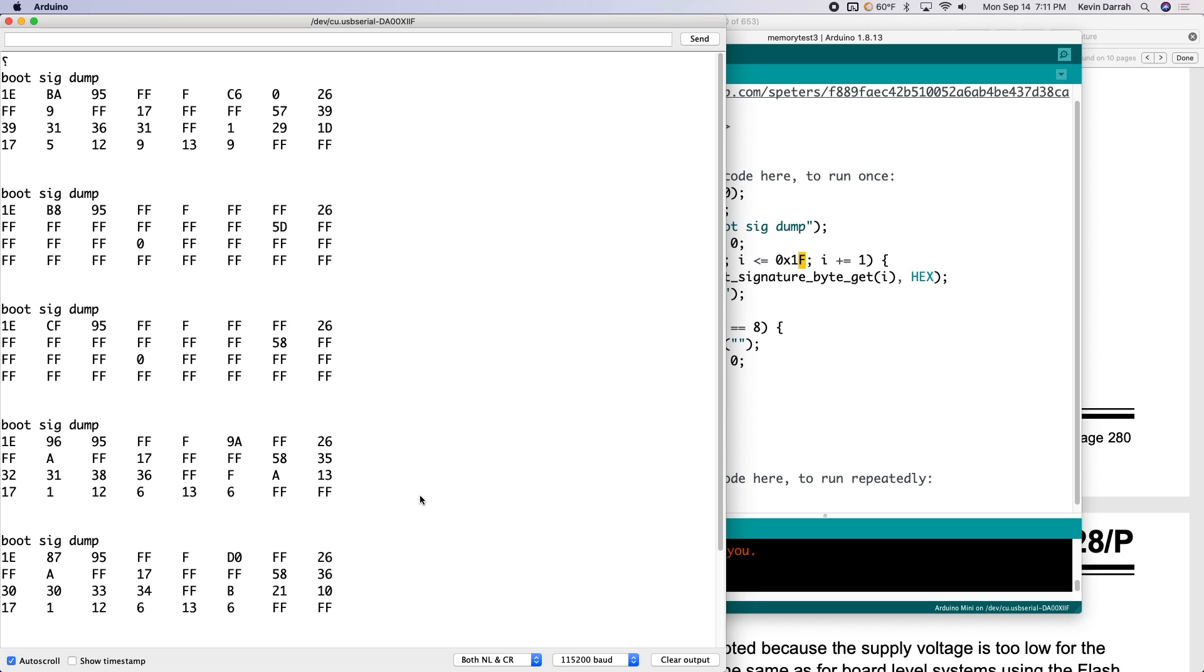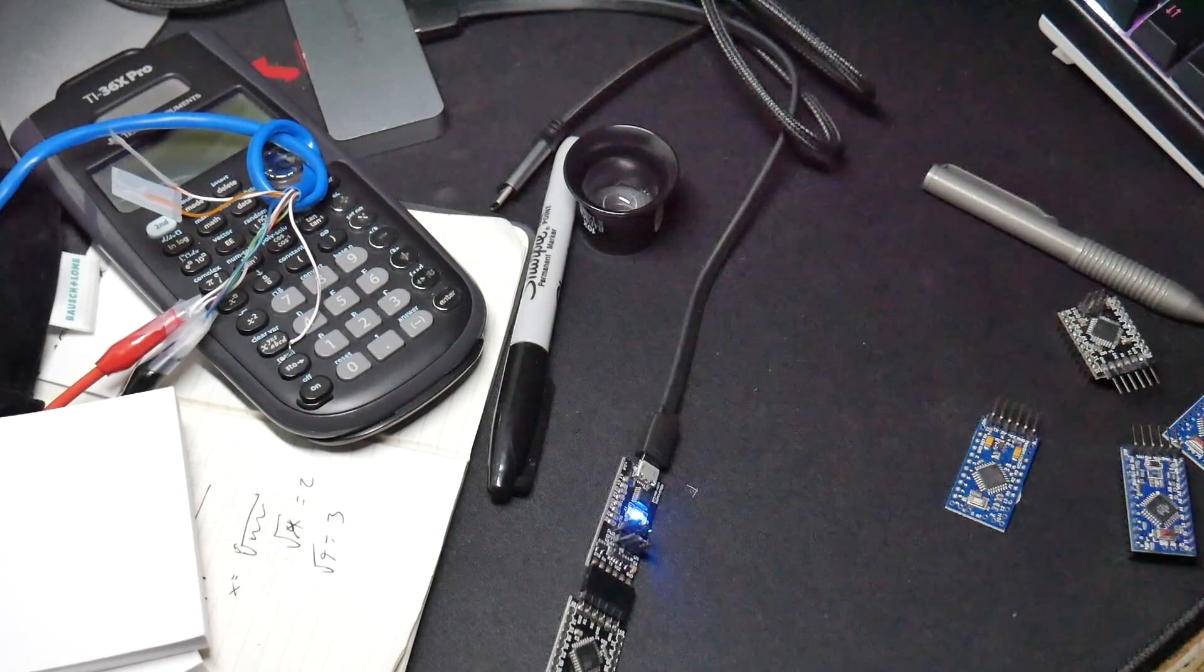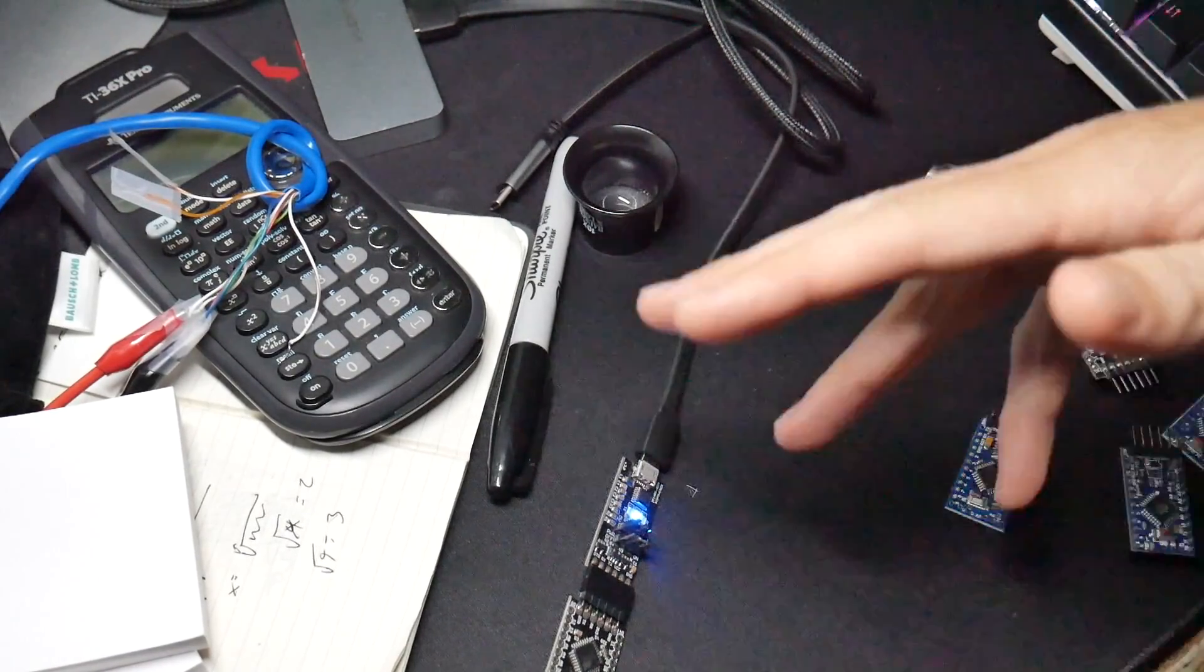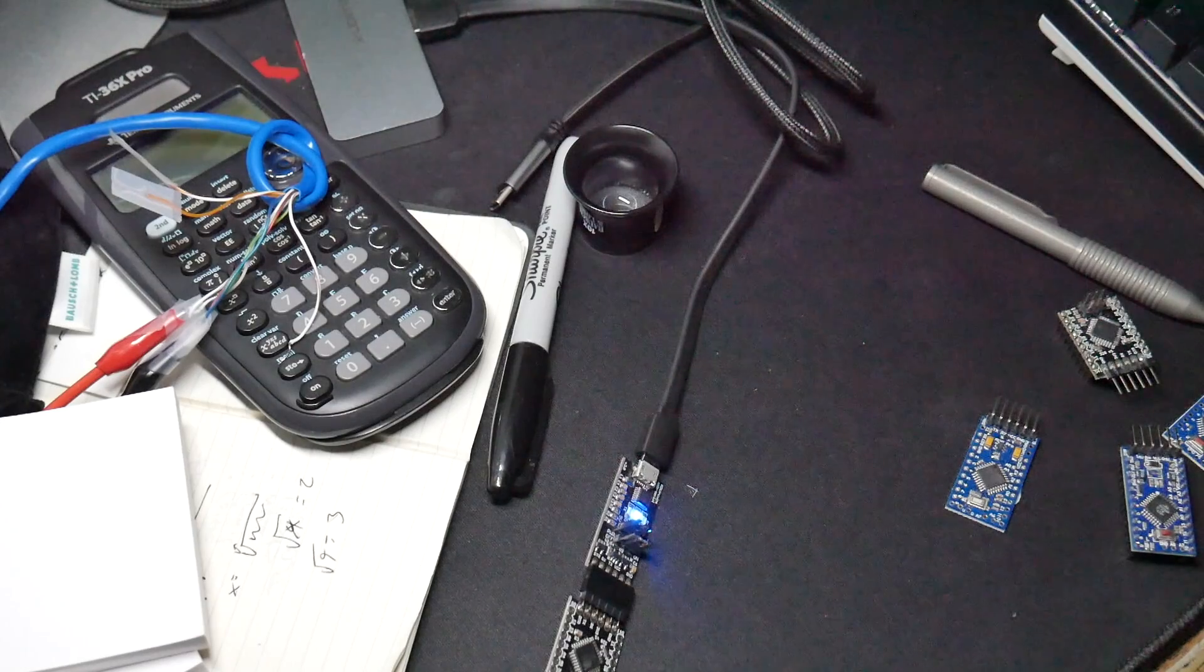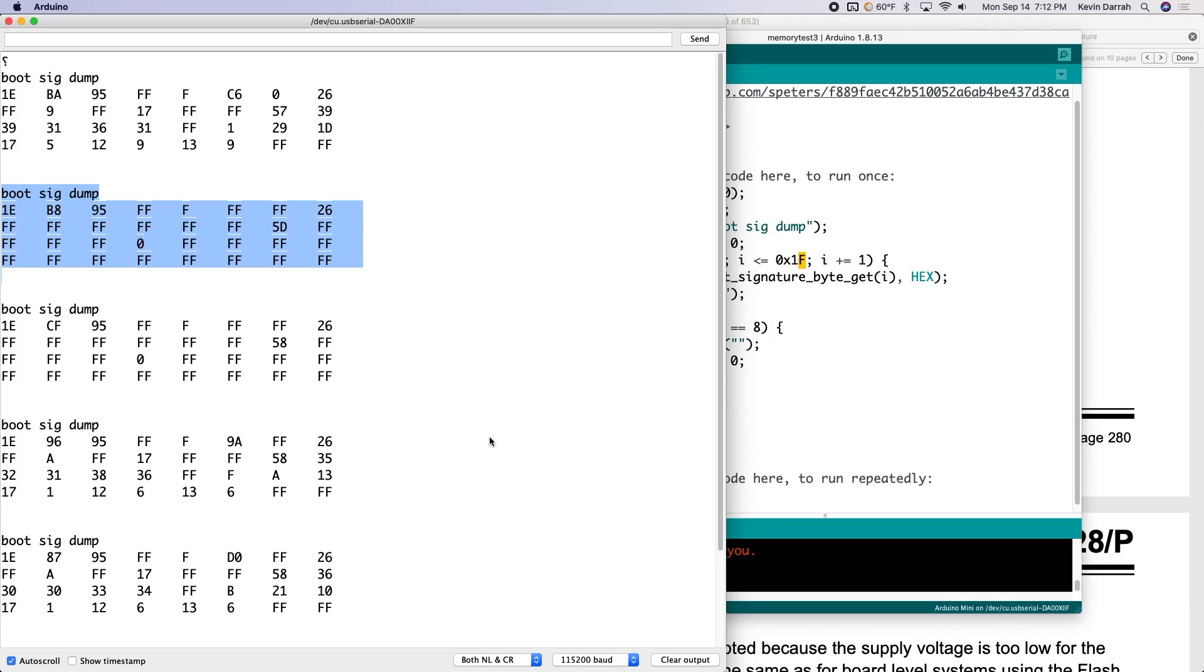So anyway, this might be a decent test for you to try out on your Pro Minis if you're concerned at all. And maybe you're not seeing things working quite right. And test it out. And let me know in the comments below if this works for you. If you've got a couple Pro Minis laying around, try running this code and let me know what your dump is. And maybe this code will be good kind of universally for catching these Pro Minis. Anyway, that's all I got. Thanks for watching.